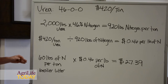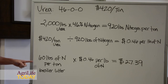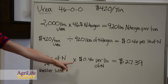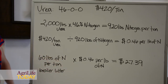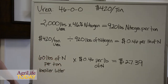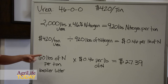So if we want to know the value of the nitrogen in broiler litter, on average it's about 60 pounds of nitrogen per ton of broiler litter. We take that 60 pounds of nitrogen and multiply it by the value of nitrogen in urea, which was $0.46 per pound of nitrogen. So the value of the nitrogen in a ton of broiler litter is $27.39.